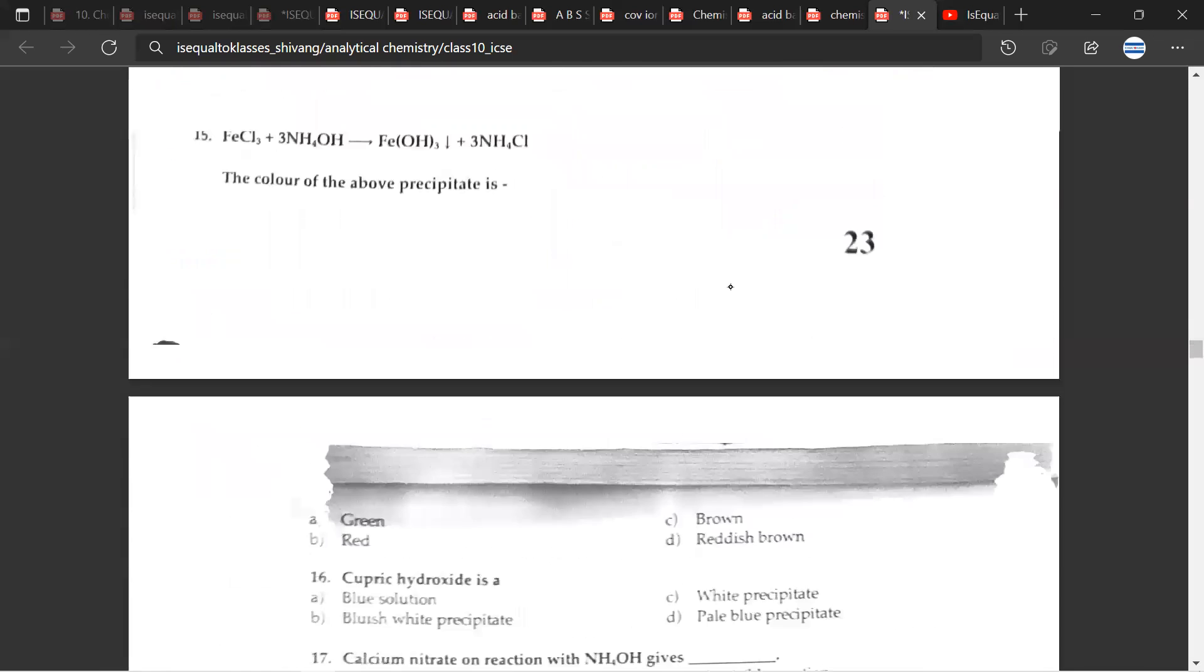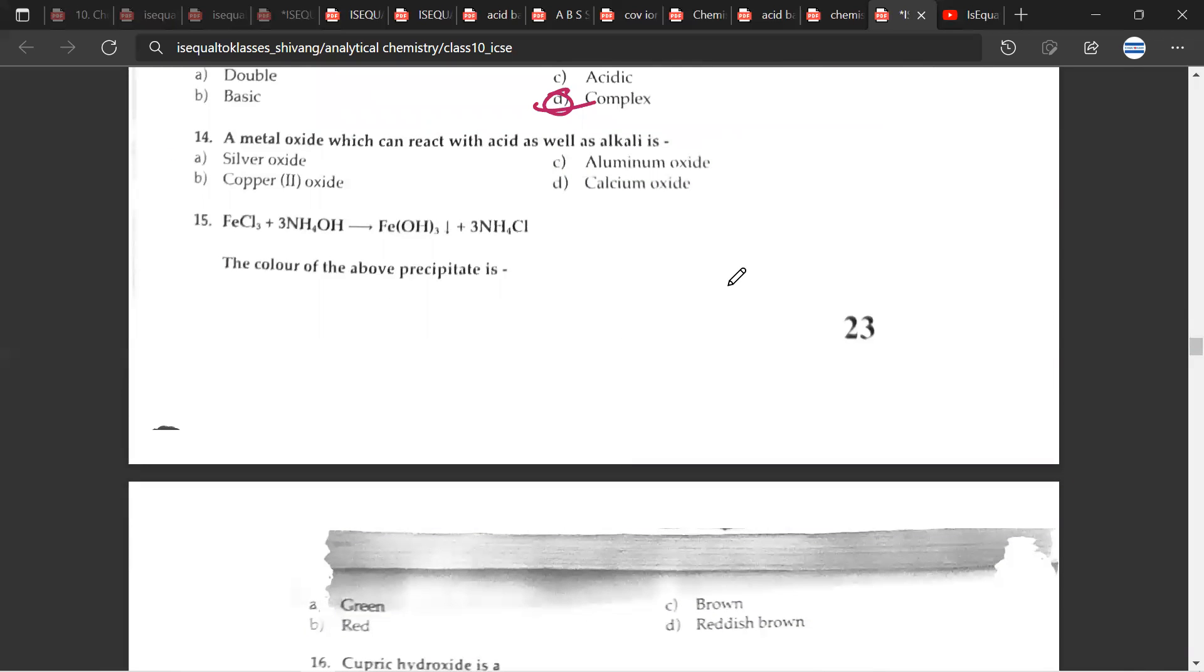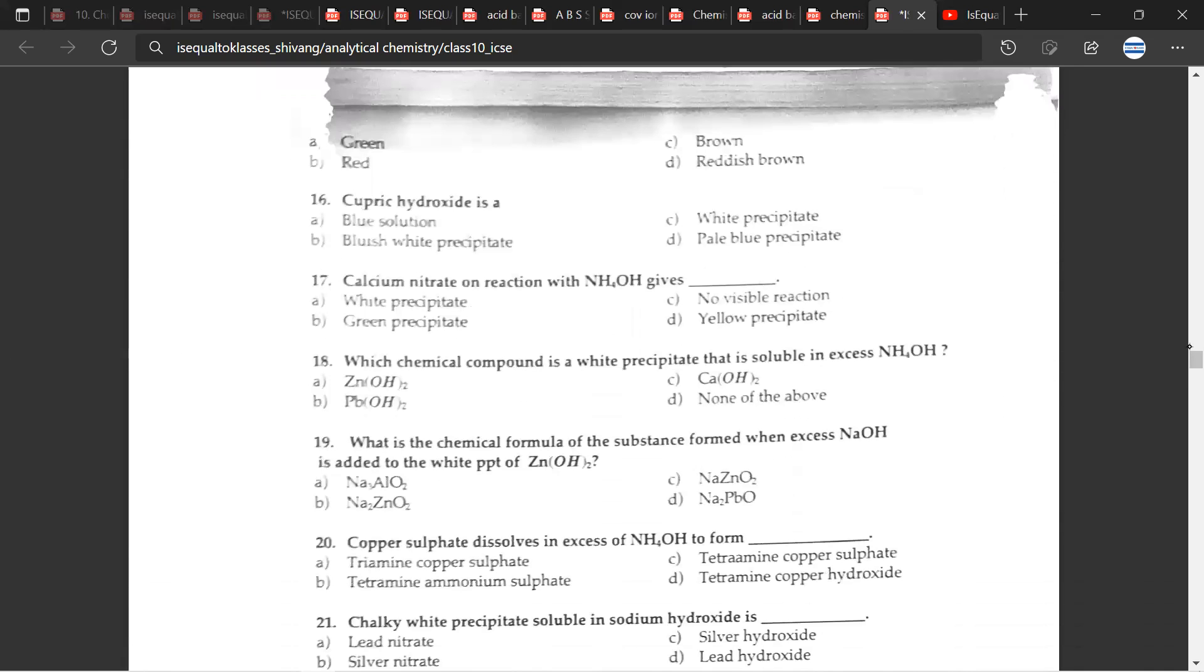Let's move on to the 14th question. A metal oxide which can react with acids as well as alkali. So we call this as amphoteric oxides and aluminum oxide is one of them. Amphoteric in the sense it reacts with both acid as well as alkalis or bases. So 15th question FeCl3 + 3NH4OH gives iron hydroxide, which is a precipitate in this case because it has the symbol arrow pointing downwards plus NH4Cl. The color of the above precipitate would be, so the correct answer for this would be it would have a reddish brown precipitate.